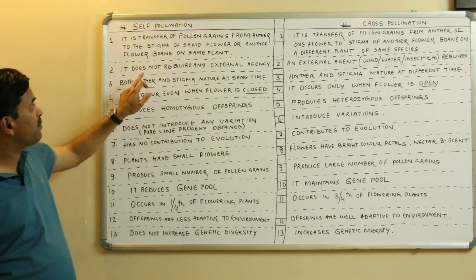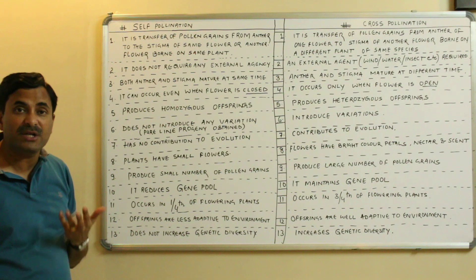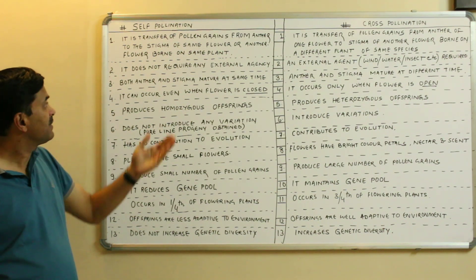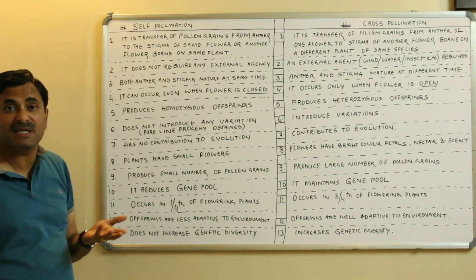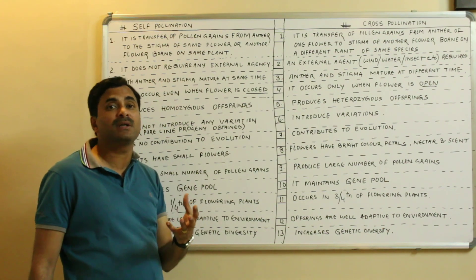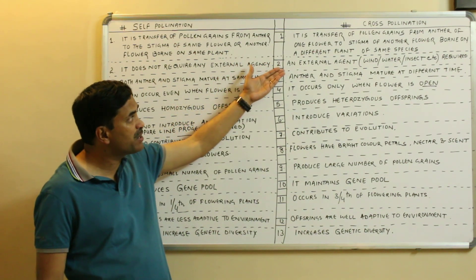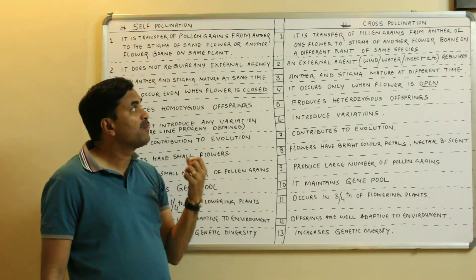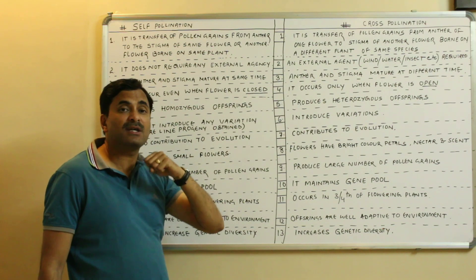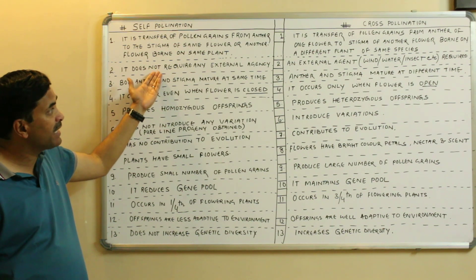Second point: self-pollination does not require any external agency. The name itself indicates it — self-pollination occurs in the same flower only, so it does not require wind, water, or any animal agent like insects. While in cross-pollination, an external agent is required — it may be a water agency, wind, insects, or any other agency.